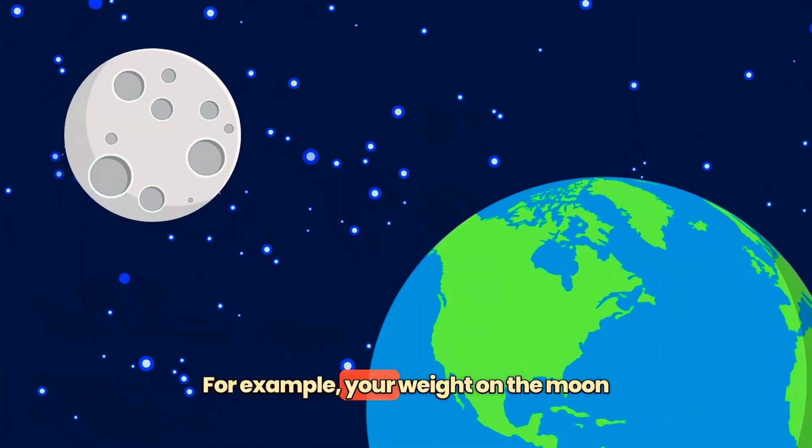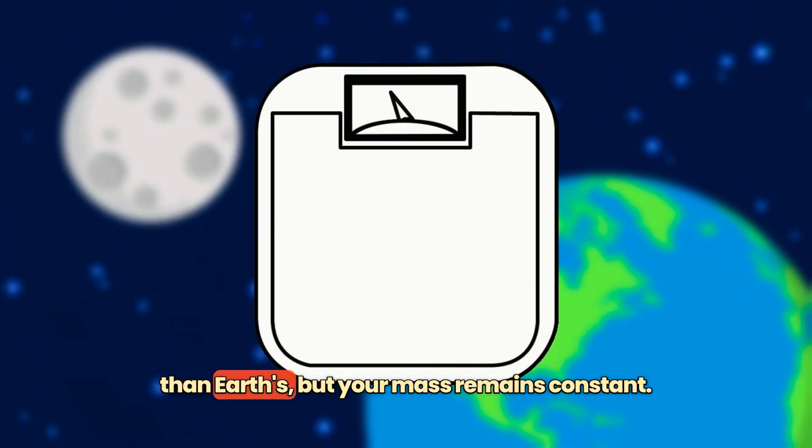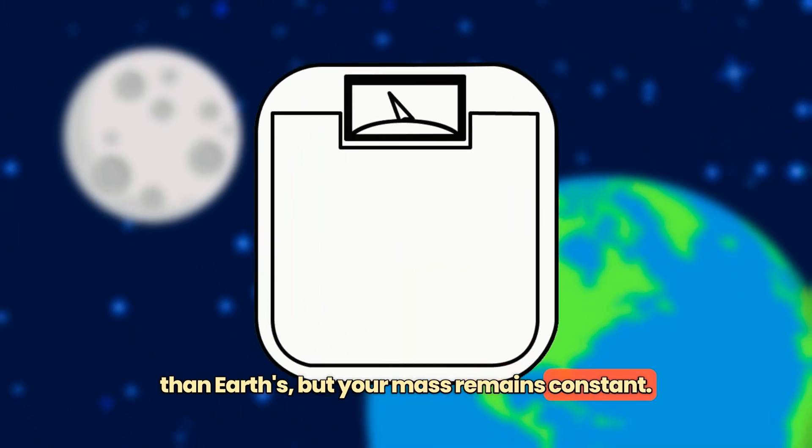For example, your weight on the moon is different than your weight on Earth because the moon's gravitational pull is weaker than Earth's, but your mass remains constant.